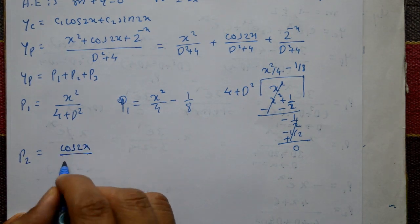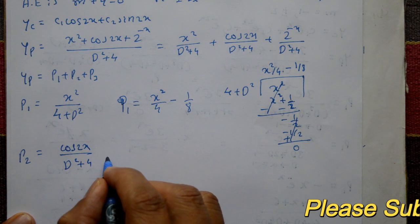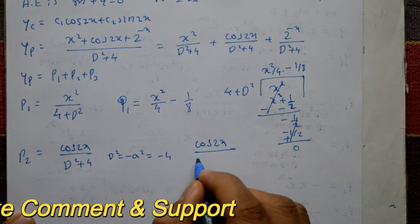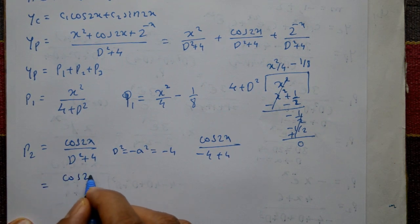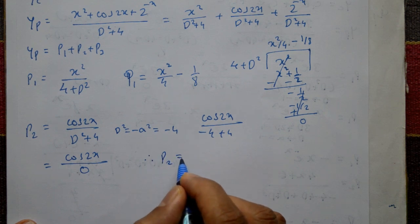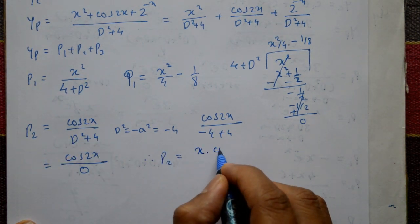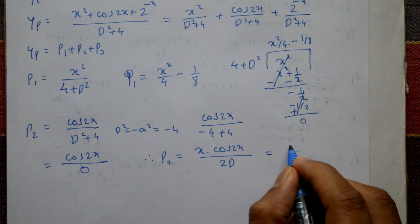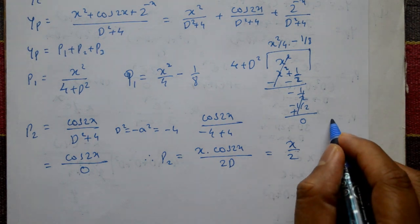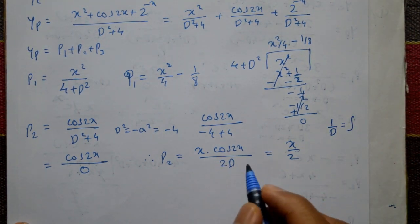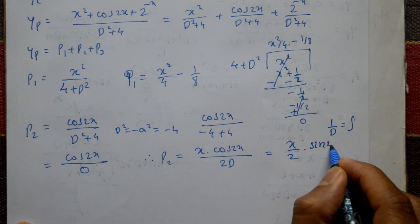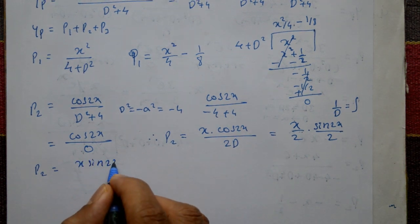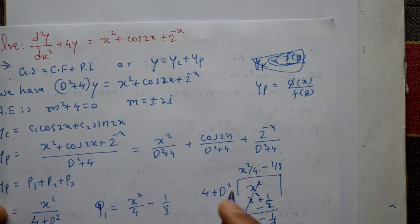For P2 = cos(2x) / (D² + 4), this is Type 2. Put D² = -a² where a = 2, so D² = -4. Then denominator = -4 + 4 = 0. Since the denominator is 0, multiply numerator by x: P2 = x·cos(2x) / f'(D). f'(D) = 2D. So P2 = x/(2D) · cos(2x). Since 1/D means integration, integrate cos(2x) to get sin(2x)/2, divided by 2. Therefore P2 = x·sin(2x)/4.